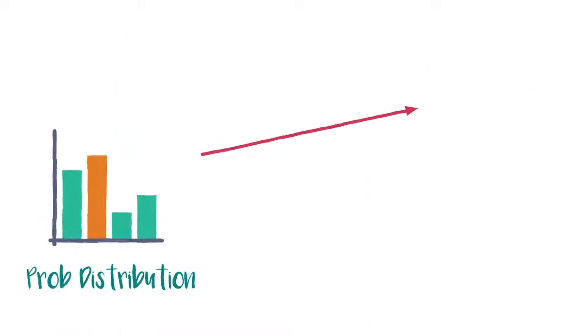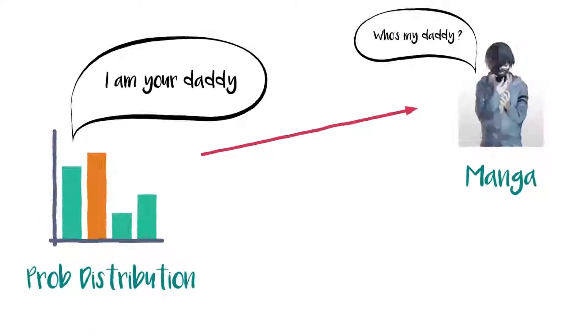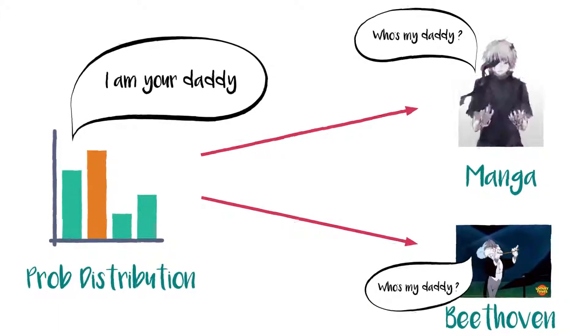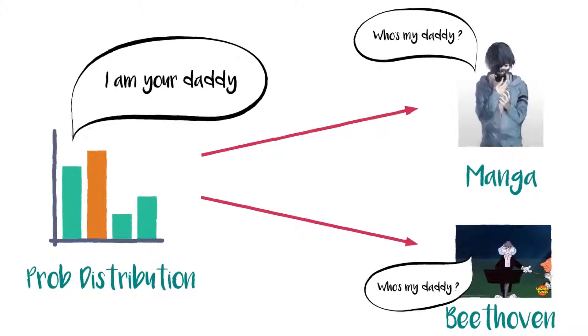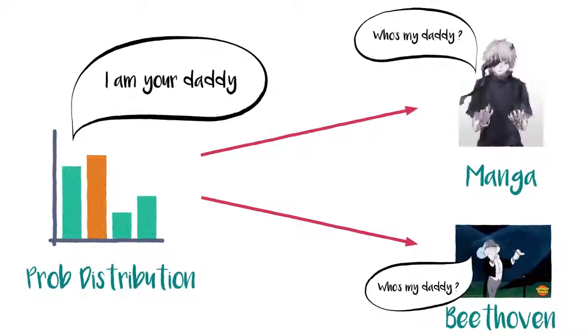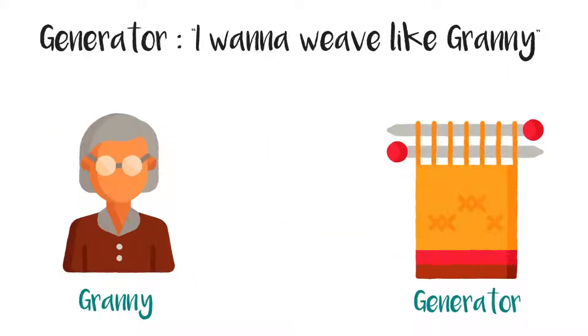the probability distribution generating manga art or the distribution generating beats in music. If we're able to model this, we can generate newer manga art by sampling from the distribution. These kinds of models are called generative models.